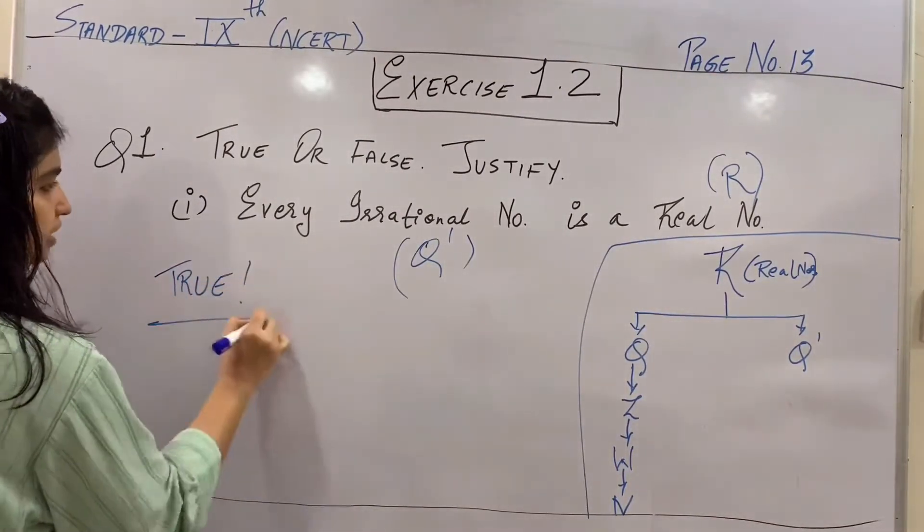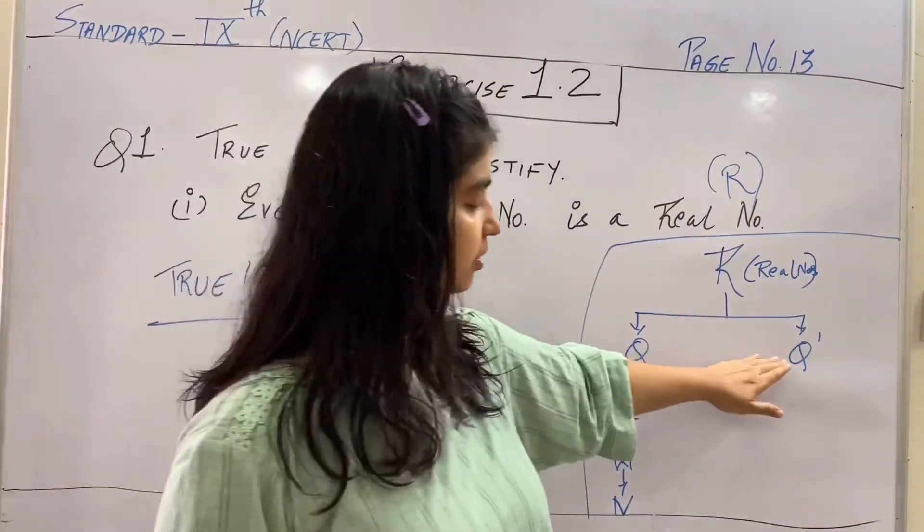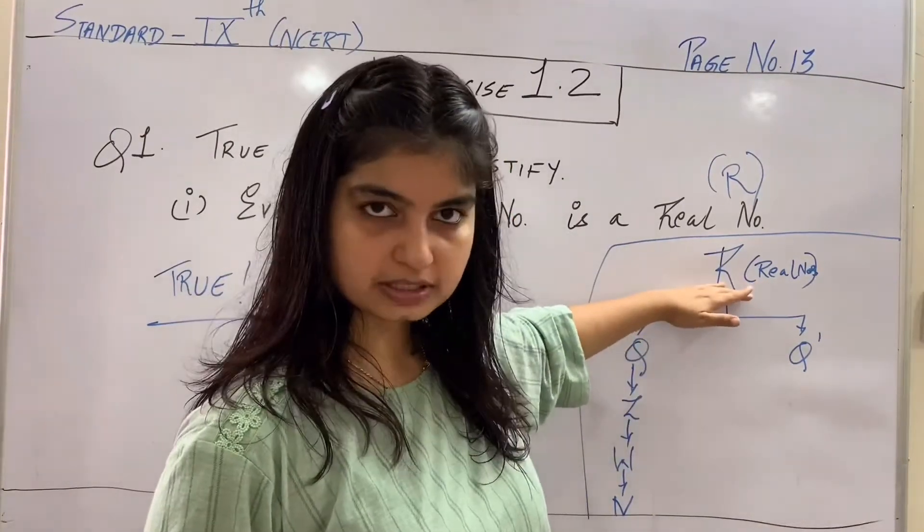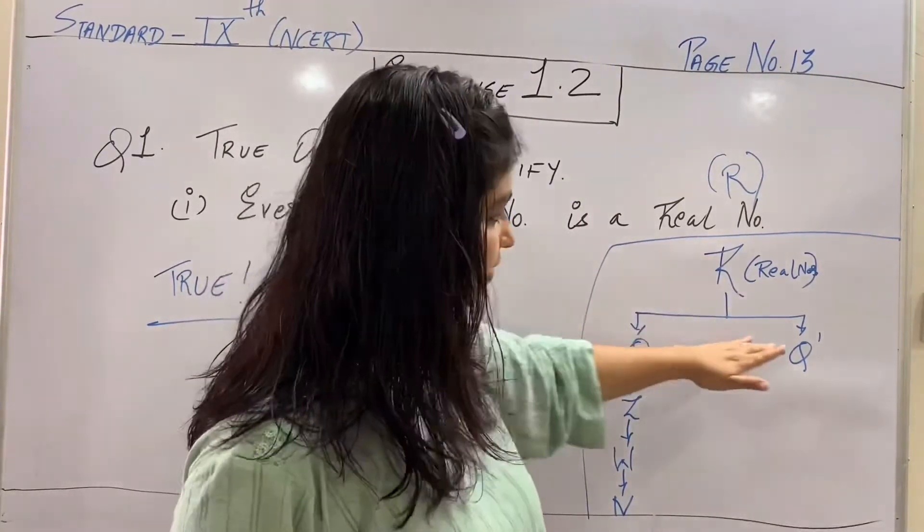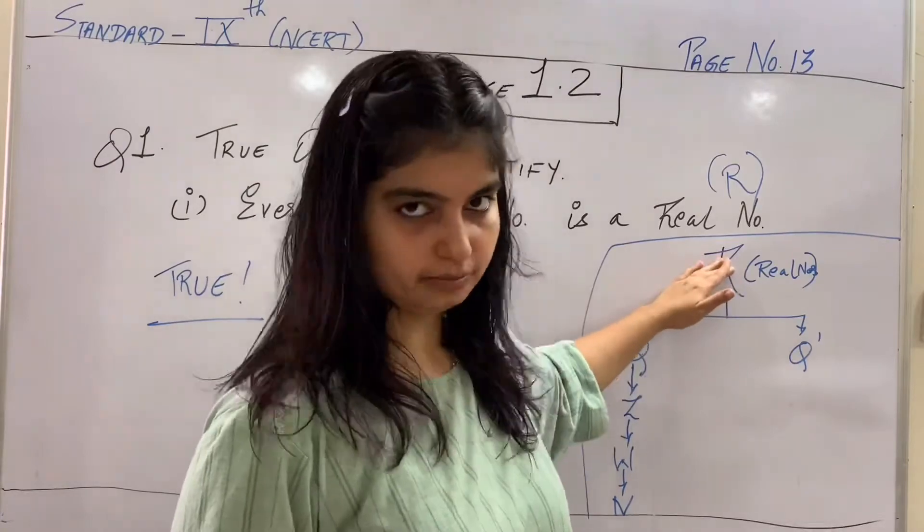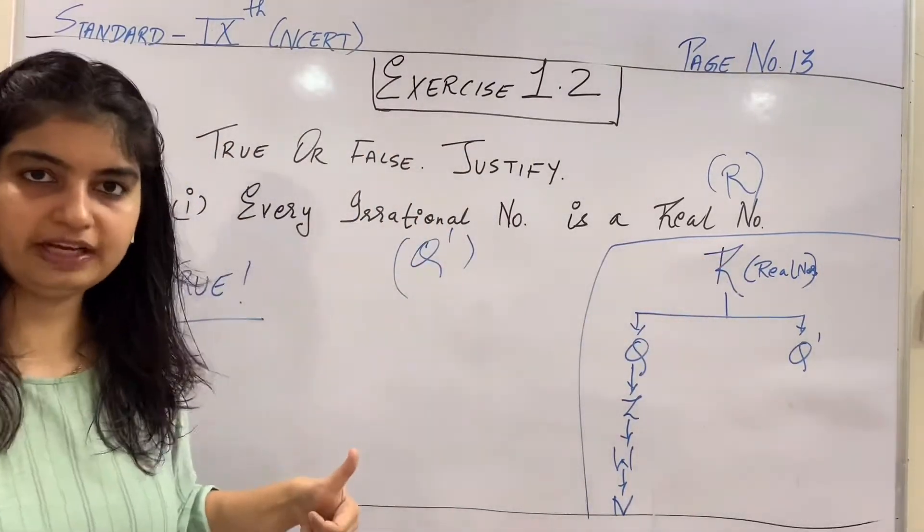Saare ki saare jo irrational numbers hain shall be included in the category of real numbers. Saare rational, saare irrational comes under real number. So, this statement is absolutely true.